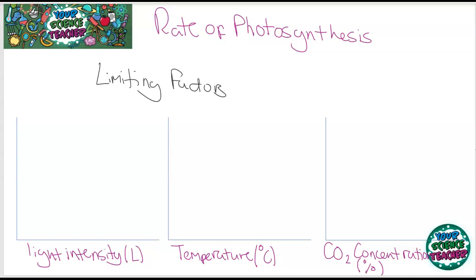And if you were to look at the graphs of what happens when you increase one of these factors to the rate of photosynthesis, you get patterns like this. As the light intensity increases, so does the rate of photosynthesis until a certain point.